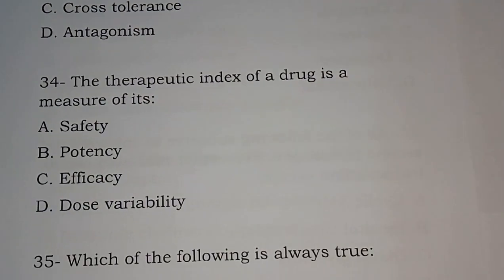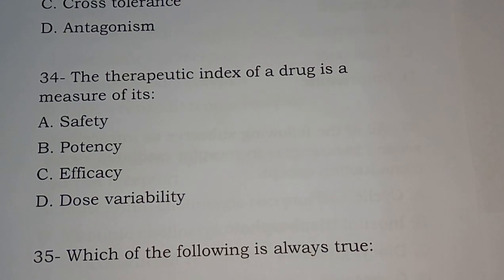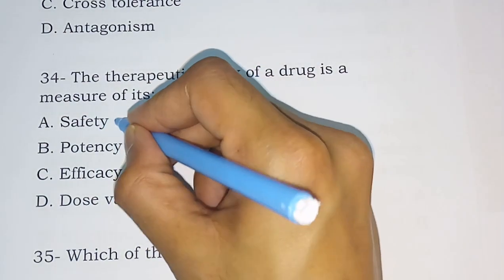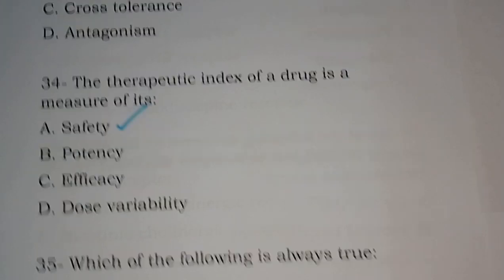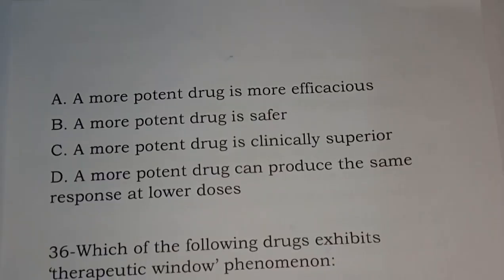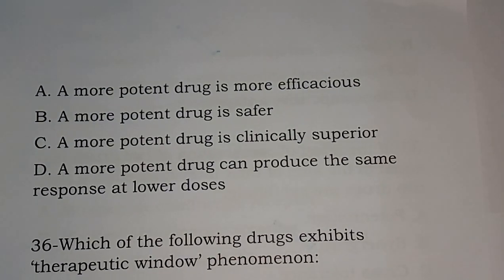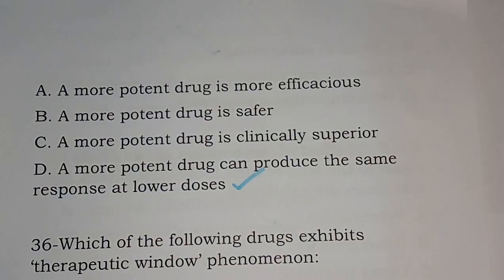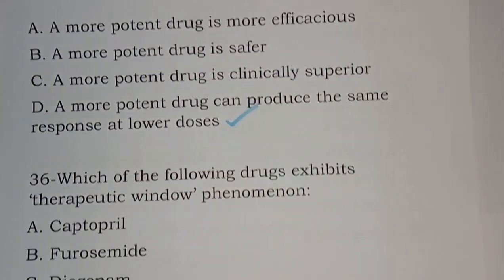Question 34: The therapeutic index of a drug is a measure of its safety, potency, efficacy, or dose variability. The correct answer is option A, safety. Question 35: Which of the following is always true? A more potent drug is more efficacious; a more potent drug is safer; a more potent drug is clinically superior; a more potent drug can produce the same response at lower doses. The correct answer is option D, a more potent drug can produce the same response at lower doses.